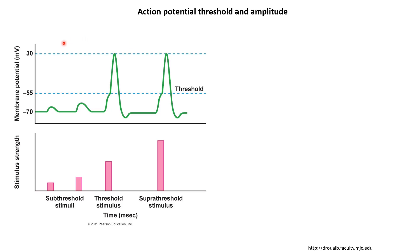Let's look at the phenomenon of the threshold first. To refresh your memory, if we give some current stimulus to a neuron, that can cause some depolarization. If you give a small stimulus, you may see a small depolarization; if you give a slightly larger stimulus, you can see a slightly larger depolarization. If the depolarizations are not large enough, we do not see action potentials. But if the depolarization is large enough, then we can see an action potential being generated. So there is a threshold, and only if the depolarization exceeds the threshold is an action potential generated.